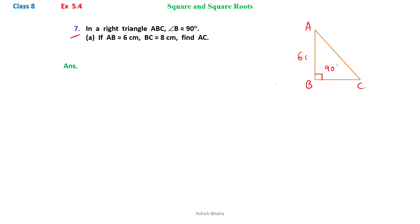AB is given to us as 6 cm, BC is given as 8 cm. We need to find out AC.